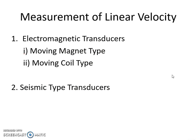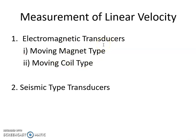In order to measure linear velocity, there are basically two types of transducers available: one is electromagnetic transducer and another one is seismic type transducer. Again, there are two types of electromagnetic transducers — moving magnet type and moving coil type. Let us discuss the electromagnetic transducer first.